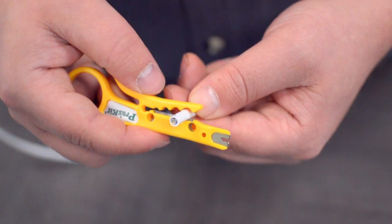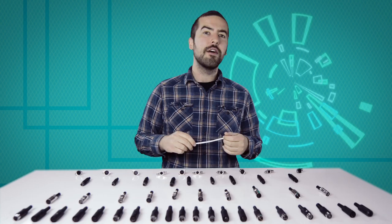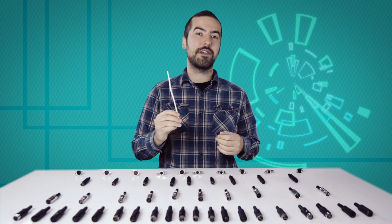Then, strip the cable jacket using the wire strippers. For this example, we will be using CAT 5E cable.